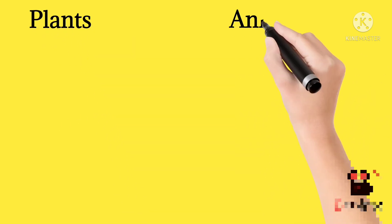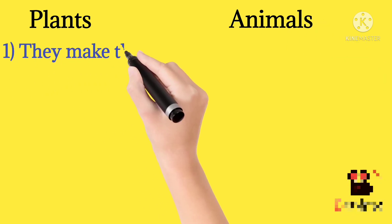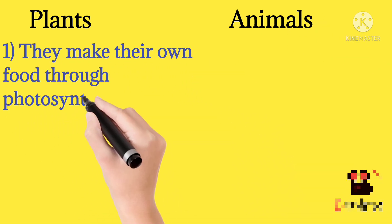Plants make their own food through photosynthesis, hence called autotrophs.